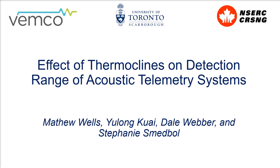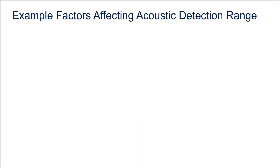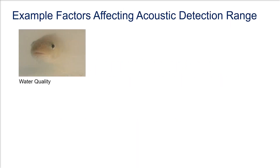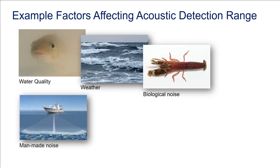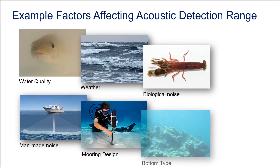This video will explain how thermal stratification can affect detection range in acoustic telemetry systems. Shown here are a number of factors that can affect acoustic detection range. Many of these factors vary significantly by location and over time. It is important to be aware of these and other environmental impacts on detection range when conducting an acoustic telemetry study in order to correctly interpret animal behavior under varying environmental conditions.